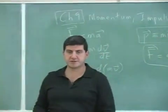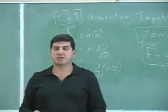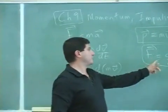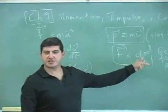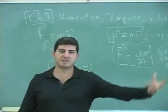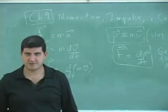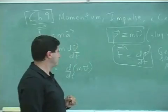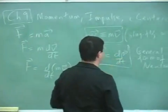As a matter of fact, when Newton first came up with his laws of motion, this is the way that he originally expressed it. He said when the force is applied on an object, it causes the momentum of the object to change. So that was his original form of the Newton's second law. Force is the derivative of momentum.